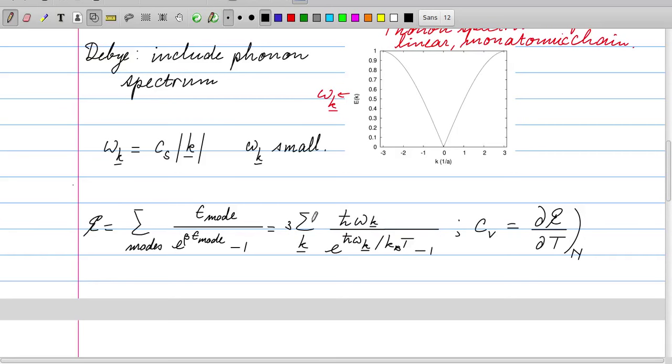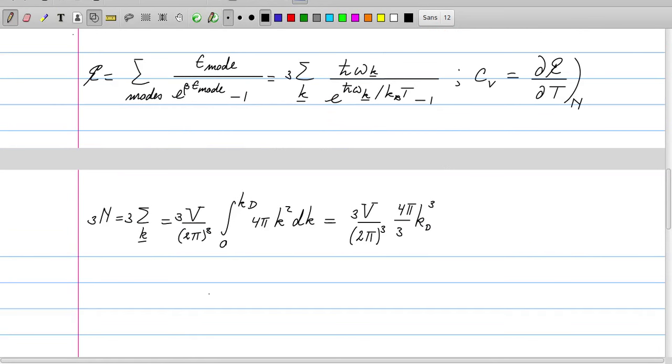Then we multiply that by the Bose-Einstein factor and the h-bar omega_k. If we want to have the specific heat, we take the temperature derivative of the result. In order to see over which mode we have to sum, we do the following.